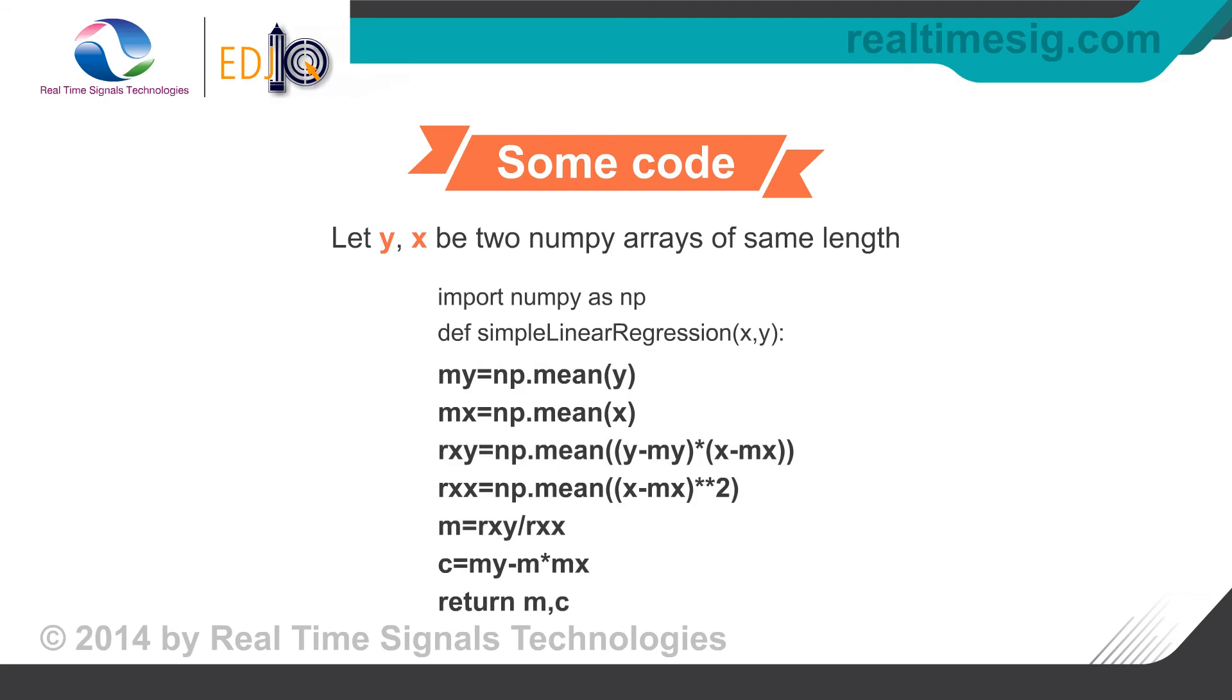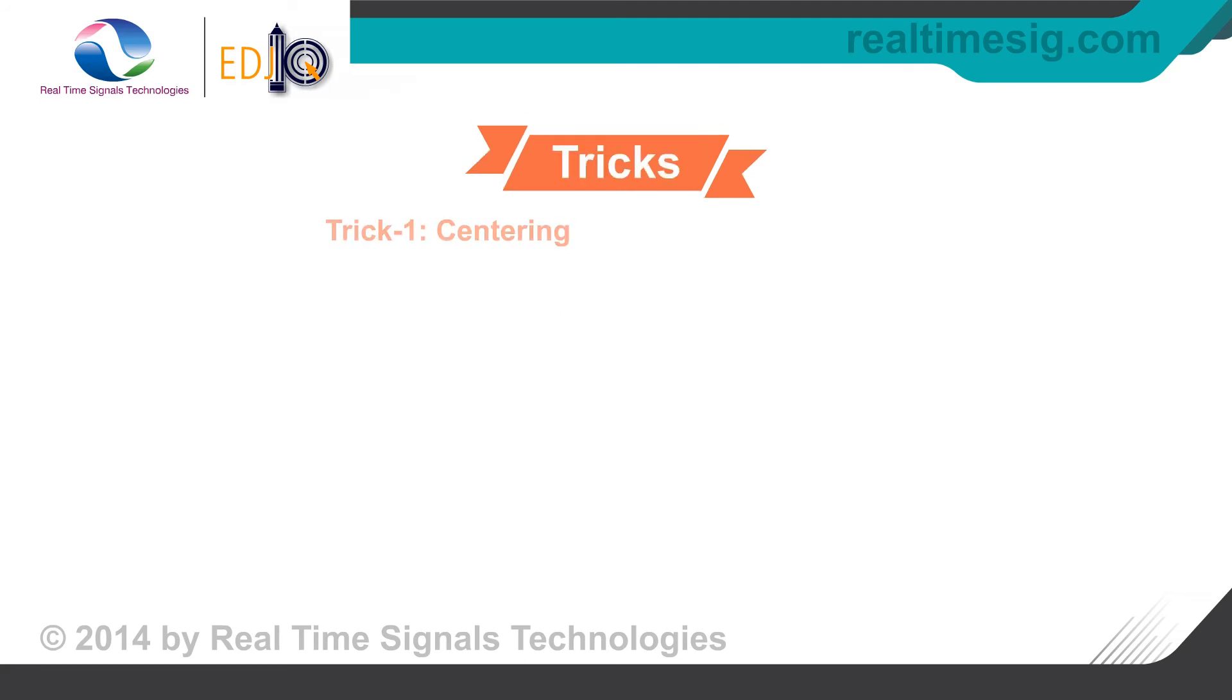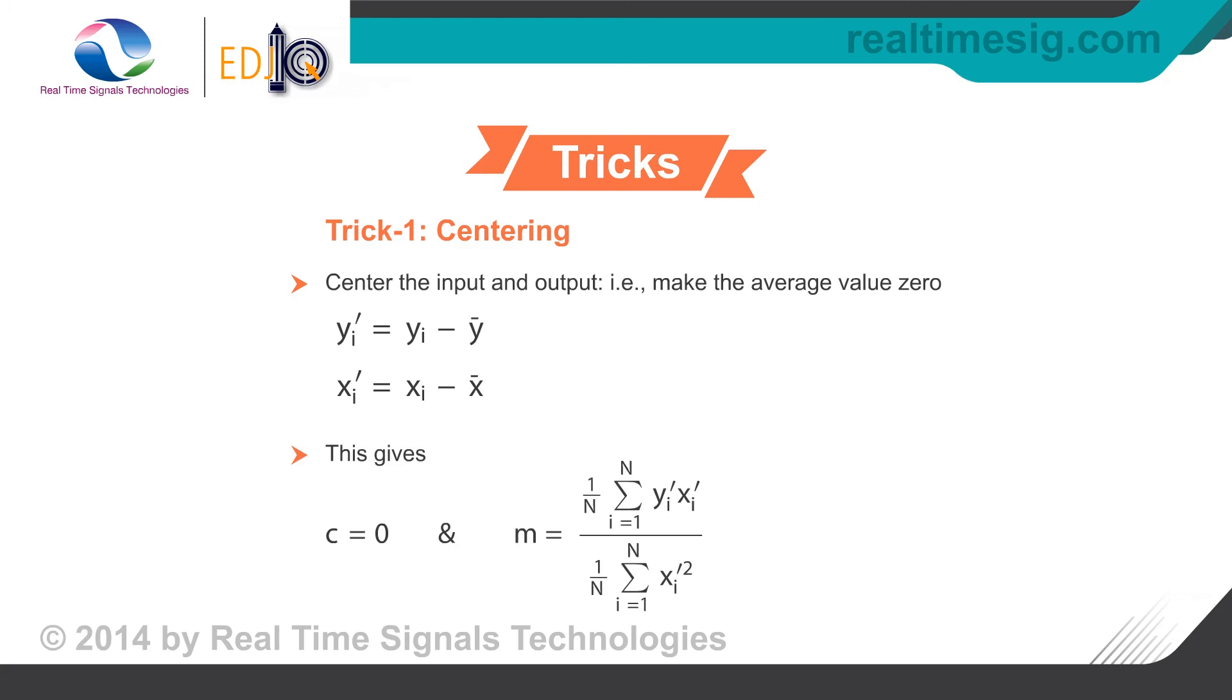In the previous slides, we saw that the variable c depends only on the average values of y and x. So if we make the average values of our observation to zero by subtracting the mean, c will be equal to zero. Hence one variable less to compute.